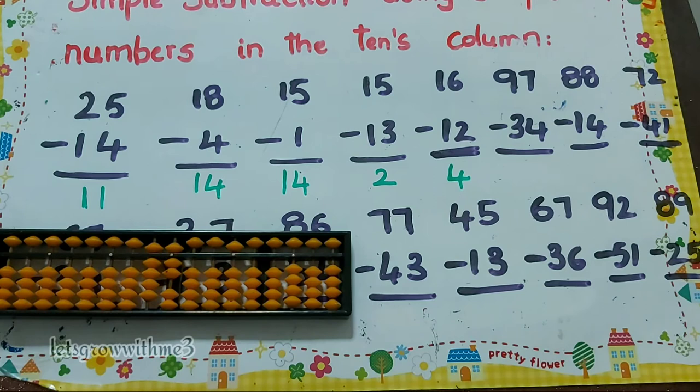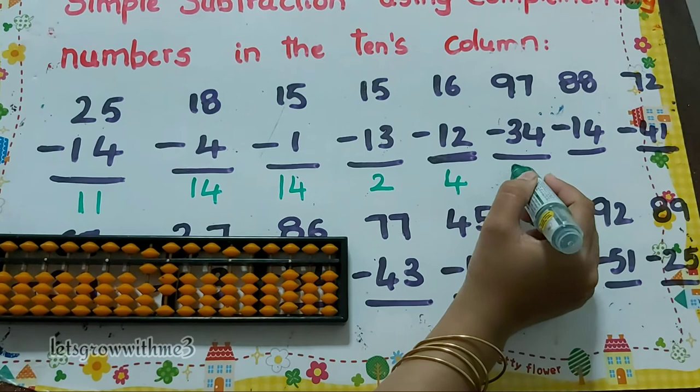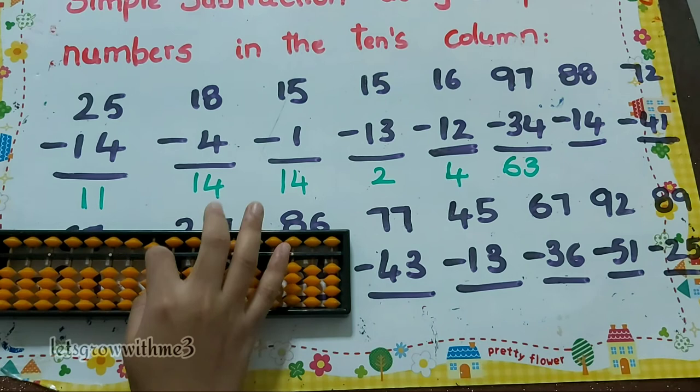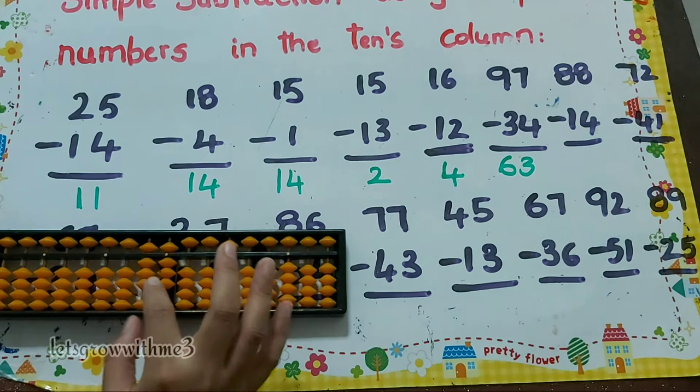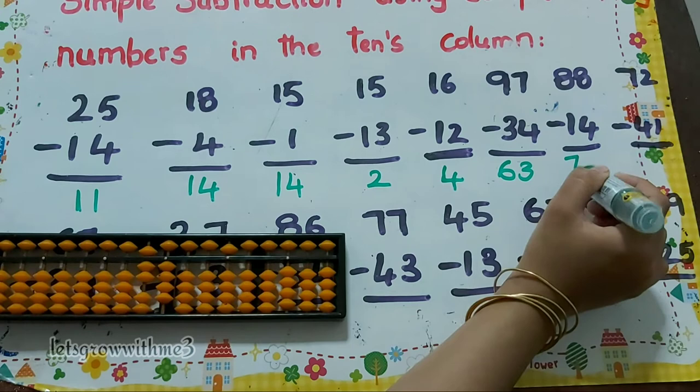Next one, 97 minus 34: minus 3, minus 4. How to do minus 4? Minus 5 plus 1, so the answer is 63. Next one, 888 minus 14: minus 1, minus 4. Minus 4 is minus 5 plus 1, so the answer is 74.